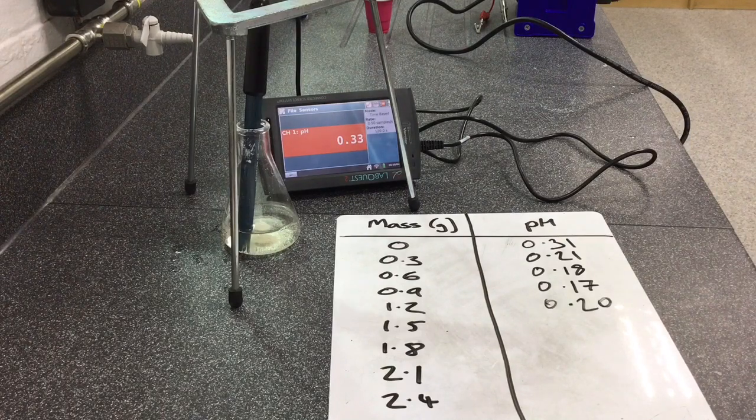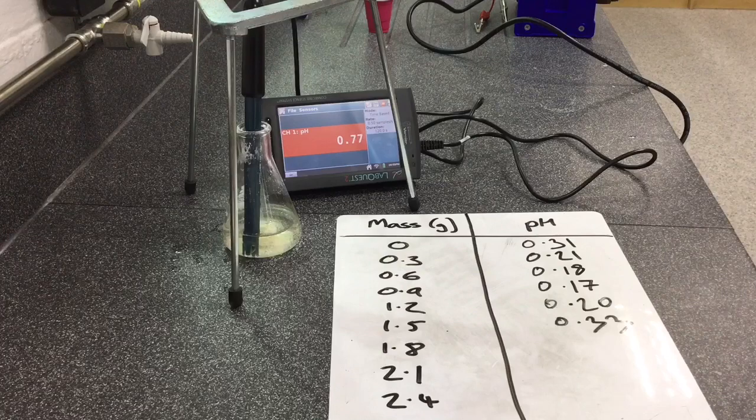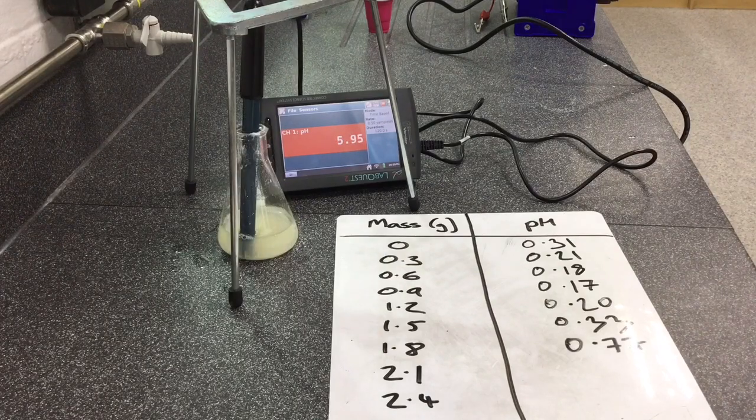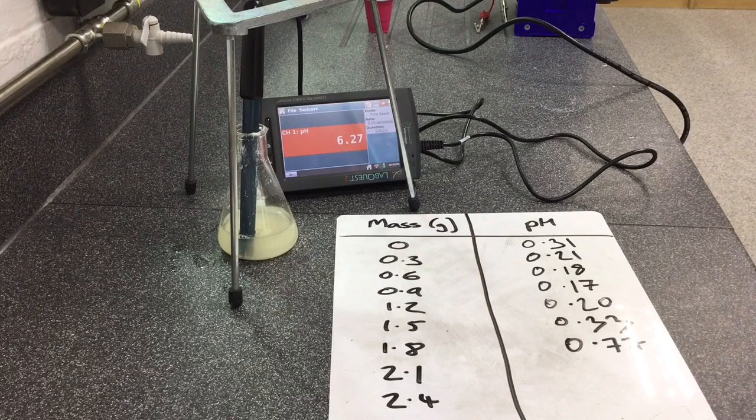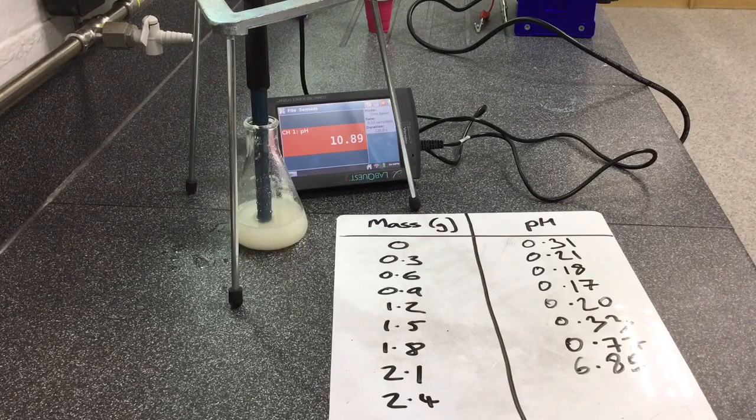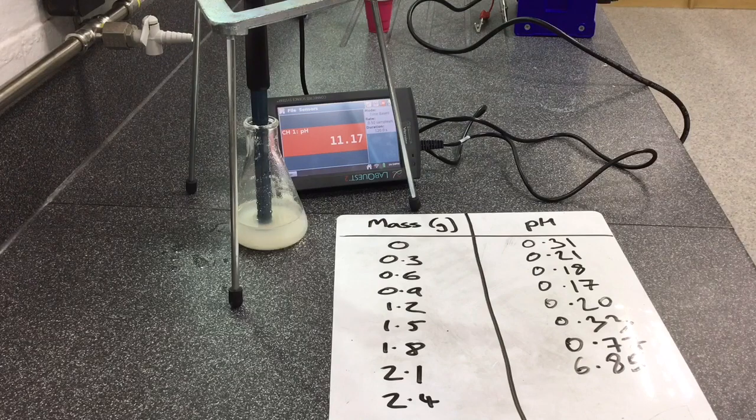As can be seen, in large amounts the calcium hydroxide becomes insoluble in the acid. The pH of the solution also begins to drastically increase. This is due to the neutralization effect the calcium hydroxide alkali has on the acid.